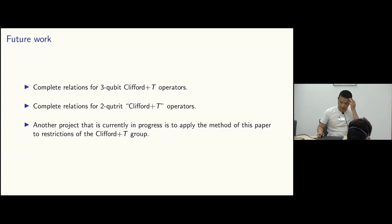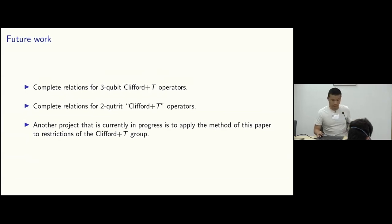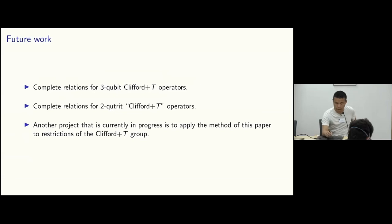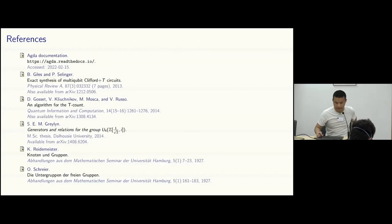For future work, I want to try three-qubit Clifford+T, two-qubit Clifford+T with some restrictions, and something for the product control-S group. Thank you.